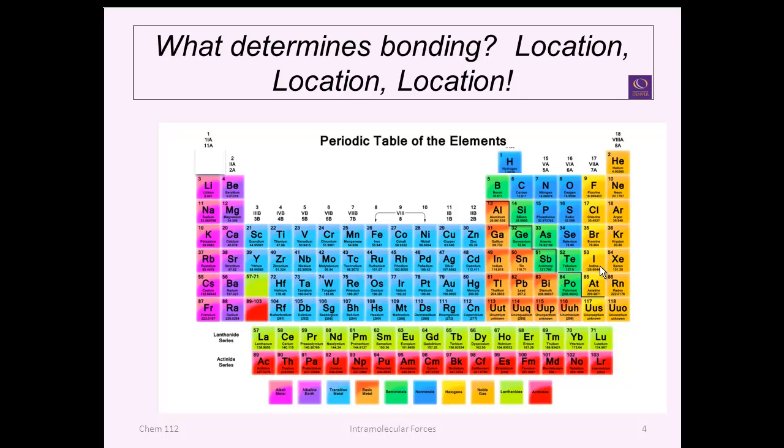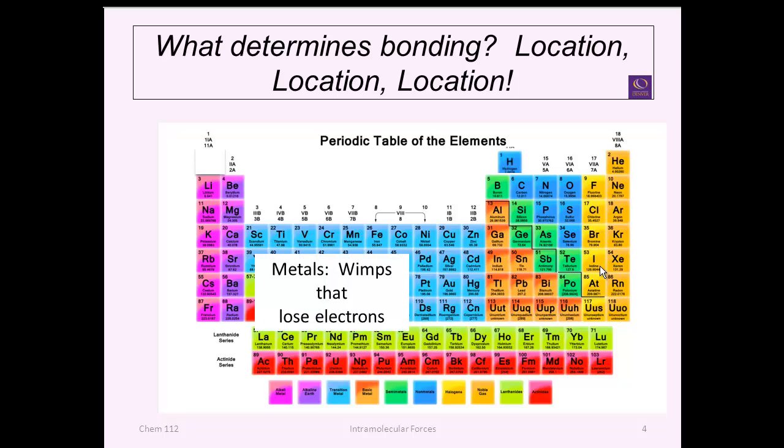It is considered nonmetal for when you talk about bonding, generally speaking. To define metals, they're wimps. They lose their electrons very easily. Nonmetals on the right of the stair step are greedy. They're grabbing electrons, they're always reaching out trying to grab electrons and they hold their electrons very tightly. The three types of bonding that we're going to work on today really deal with the different combinations you can have between metals and nonmetals.